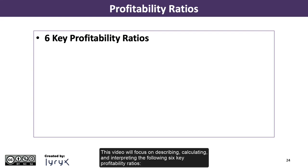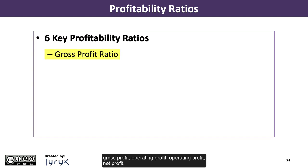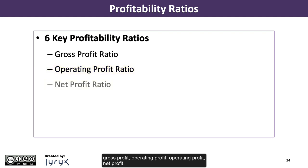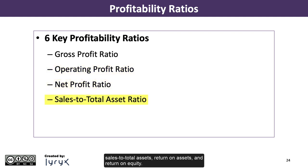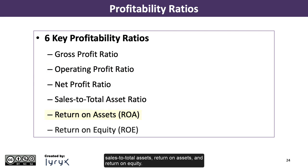This video will focus on describing, calculating, and interpreting the following six key profitability ratios: Gross Profit, Operating Profit, Net Profit, Sales to Total Assets, Return on Assets, and Return on Equity.